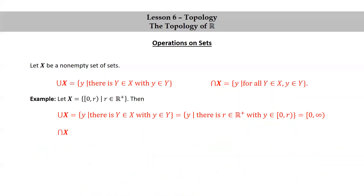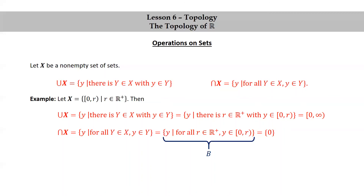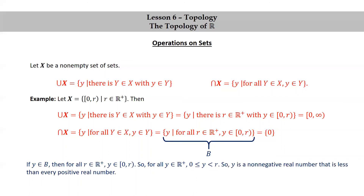Let's also find the intersection X. Rewriting the definition for this particular example, it's the set of y such that for all positive real numbers R, y is in the half-open interval 0 to R. We'll show that this is equal to the set containing only zero. Let's call this set B. So B is the set of y such that for all positive real numbers R, y is in the half-open interval 0 to R, and we're going to show that B is equal to the set consisting of zero by showing that each one is a subset of the other.